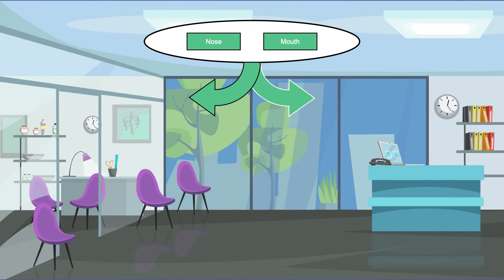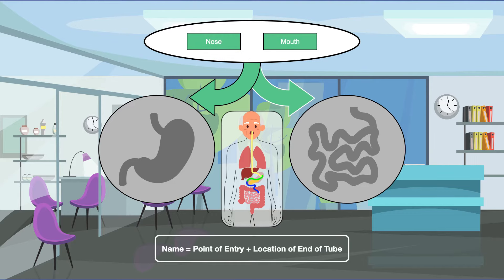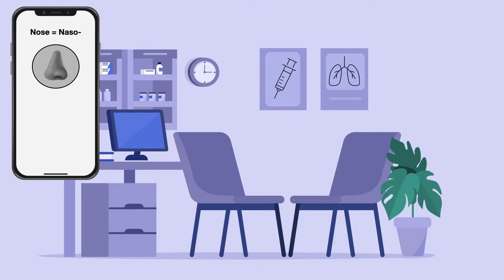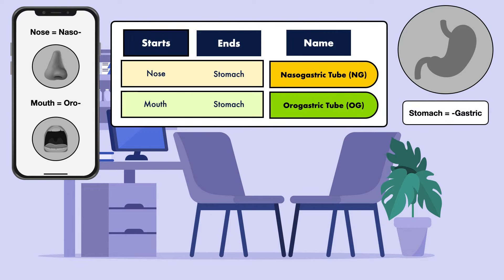The short-term feeding tubes can be guided into the stomach or small intestine, and this is what will ultimately determine the name of the tube. Each name is a combination of the point of entry and the location of the end of the tube. For the nose, we use naso. For the mouth, we use oro. And for the stomach, we use gastric. So if the tube is inserted through the nose and ends in the stomach, it is a nasogastric tube, or NG tube. If the tube is inserted through the mouth and ends in the stomach, it is an orogastric tube, or OG tube.